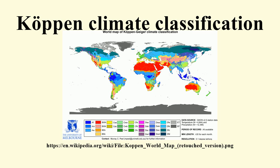In the 1960s, the Trewartha climate classification system was considered a modified Köppen system that addressed some of the deficiencies of the Köppen system.